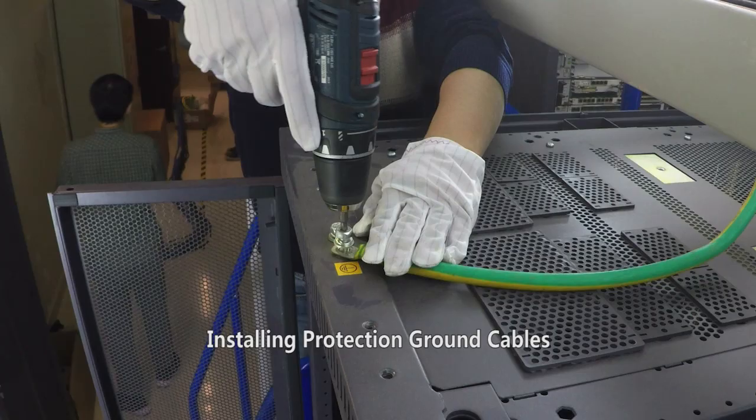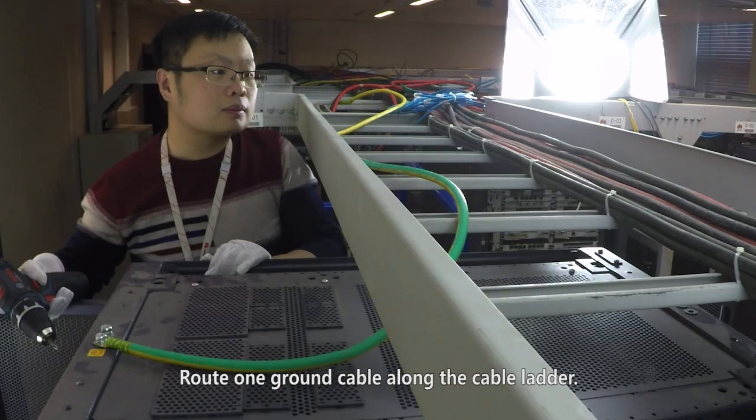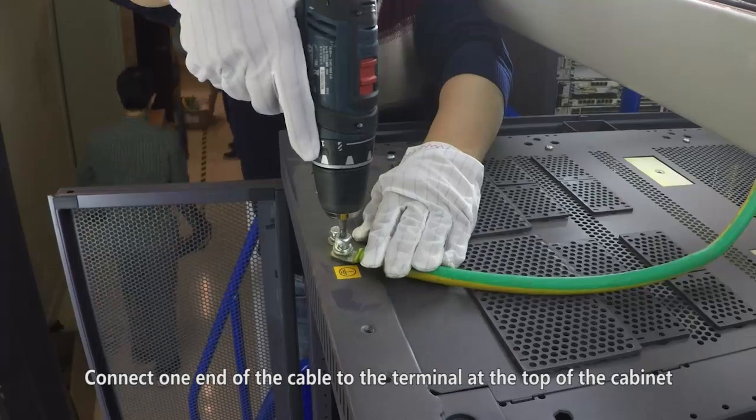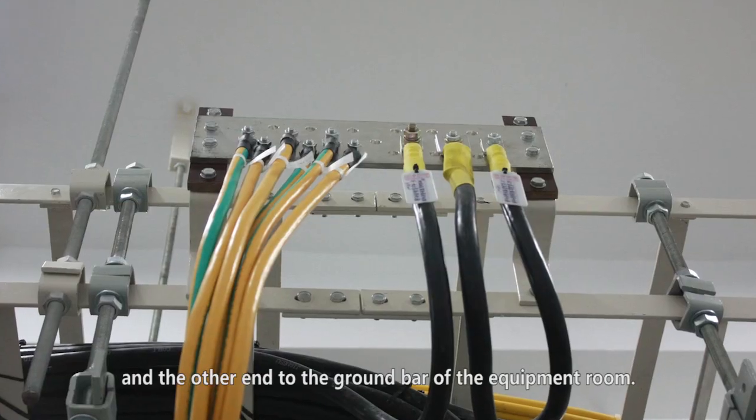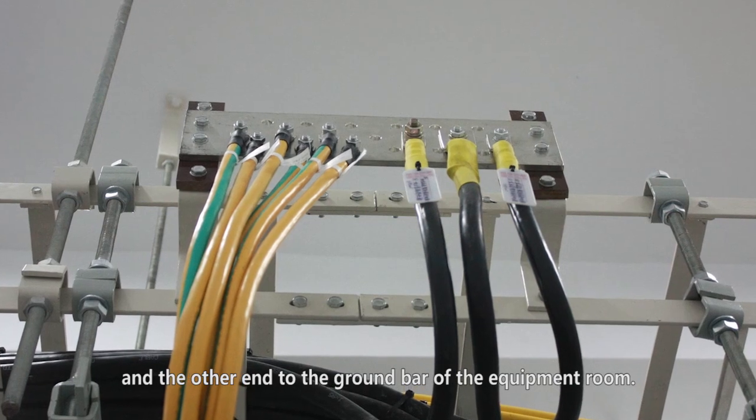Install protection ground cables. Route one ground cable along the cable ladder. Connect one end of the cable to the terminal at the top of the cabinet and the other end to the ground bar of the equipment room.